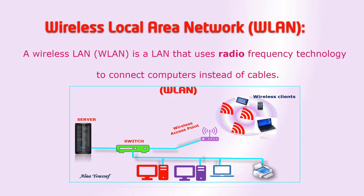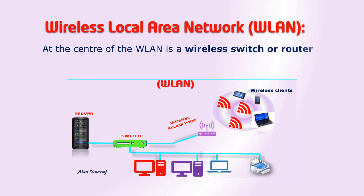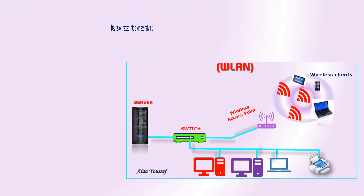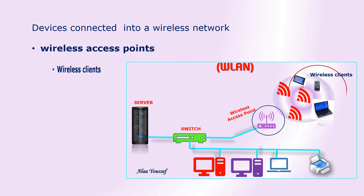At the center of a Wireless Local Area Network is a wireless switch or router used to communicate with connected devices. Devices connected into a wireless network may be categorized into two categories: Wireless Access Points and Wireless Clients.